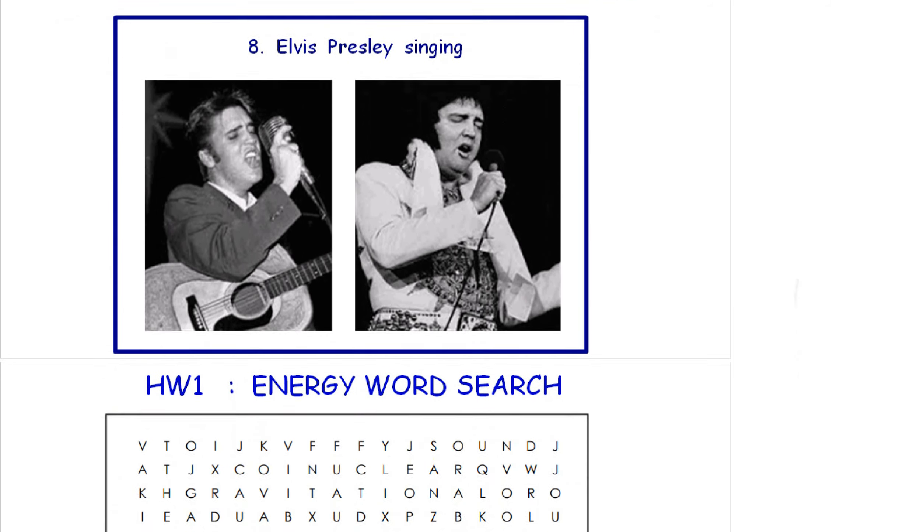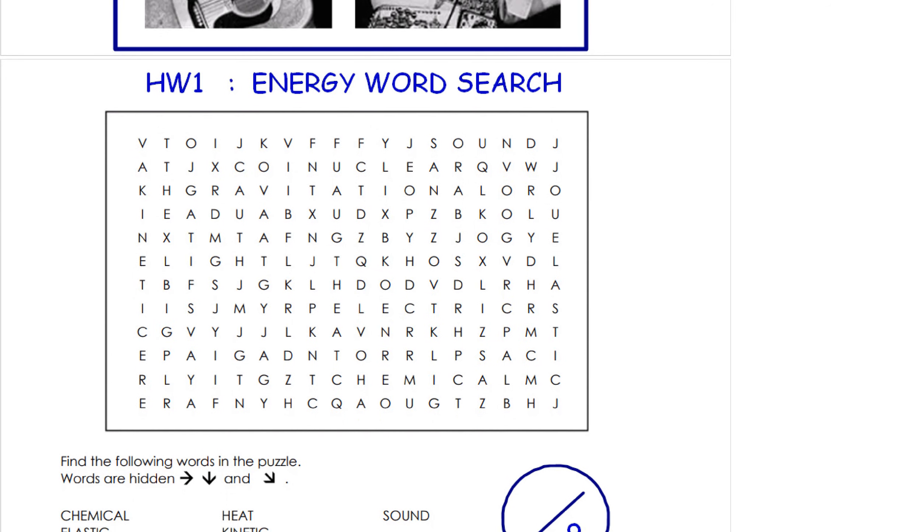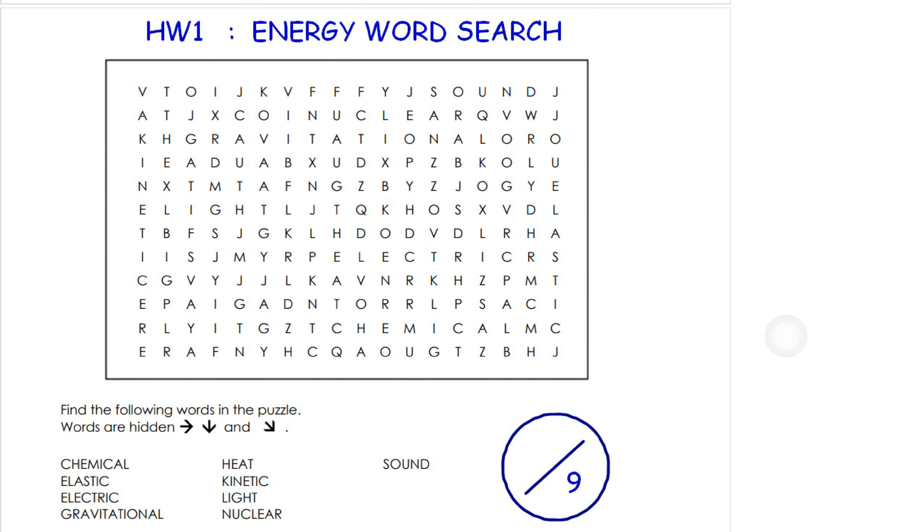Once you have finished those eight diagrams, these pictures, and written up the different forms of energy, there is an energy word search, it's the homework. Let's go through this word search now. Find the following words in the puzzle. Here are the words, we've got these four down here, these four here, and this one here, so it's out of nine marks. I'm going to help you out with one of them: gravitational, there it is, gravitational. Best of luck finding out what the answers are with that.